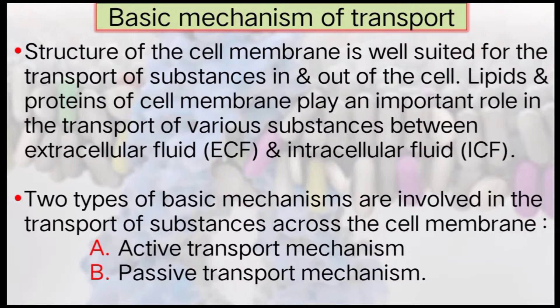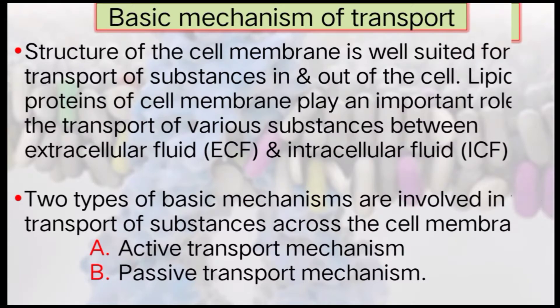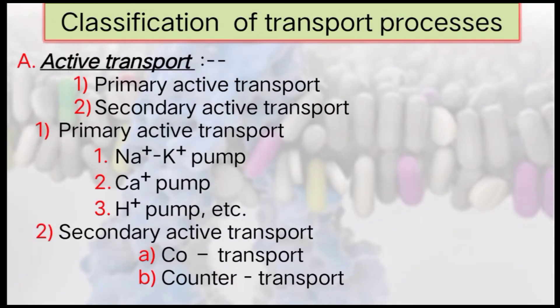Two types of basic mechanisms are involved in the transport of substances. First, active transport mechanism; second, passive transport mechanism. The active transport mechanism is further classified into primary active transport and secondary active transport. Examples of primary active transport include the sodium-potassium pump, calcium pump, and hydrogen pump.